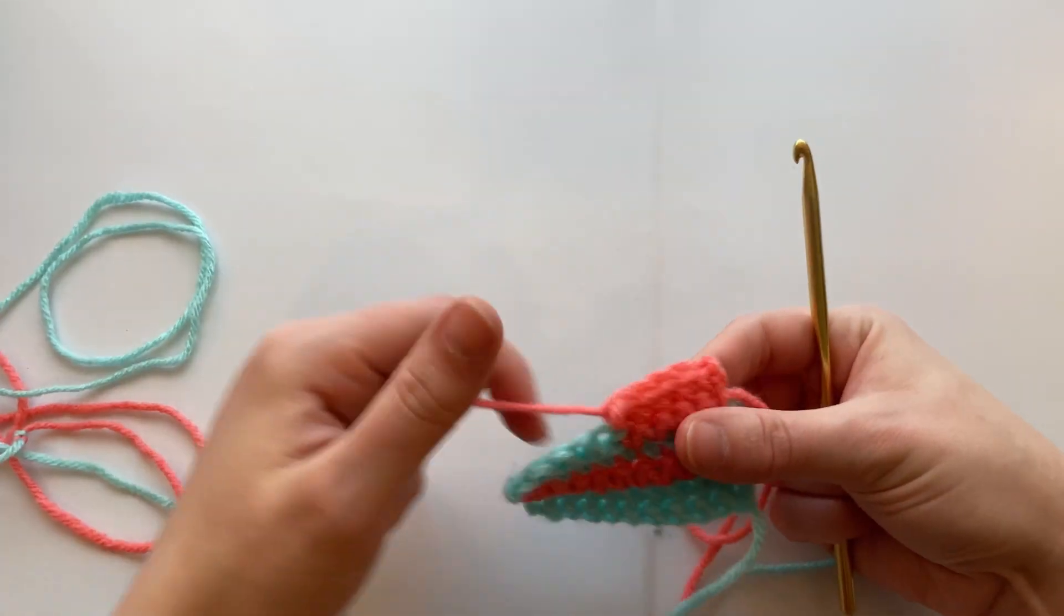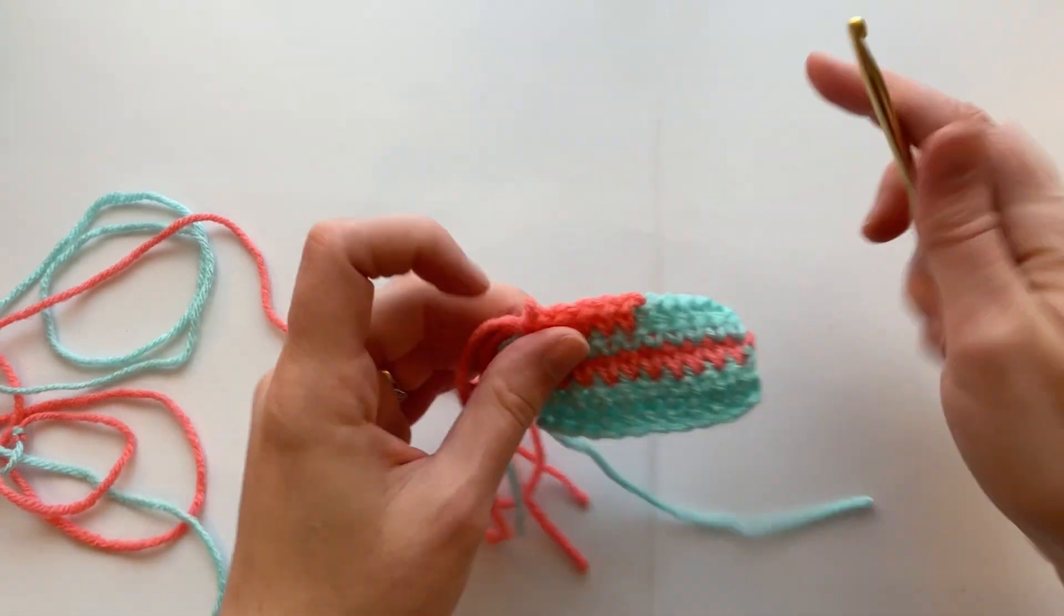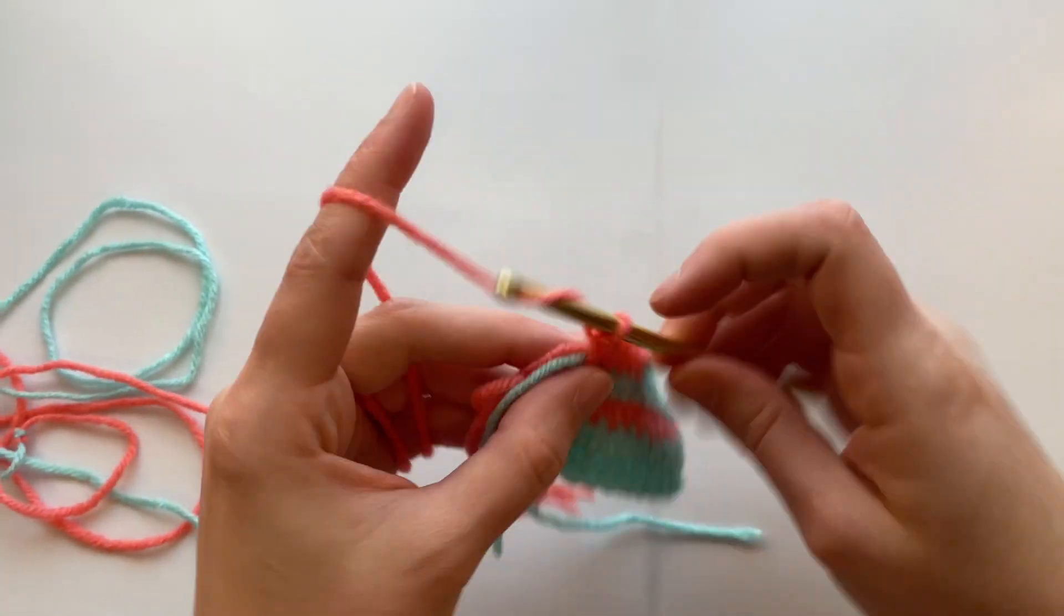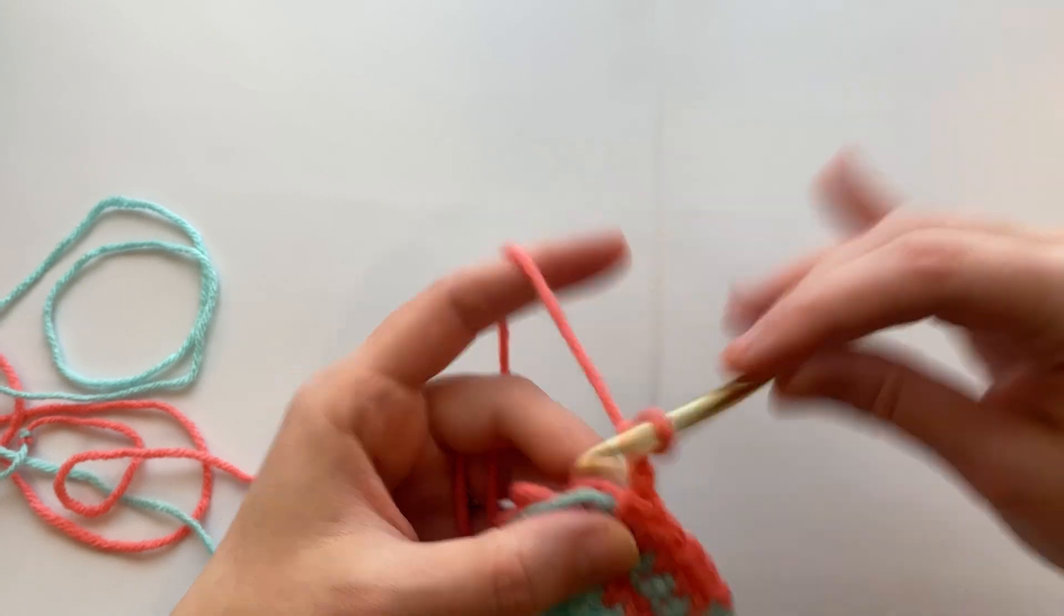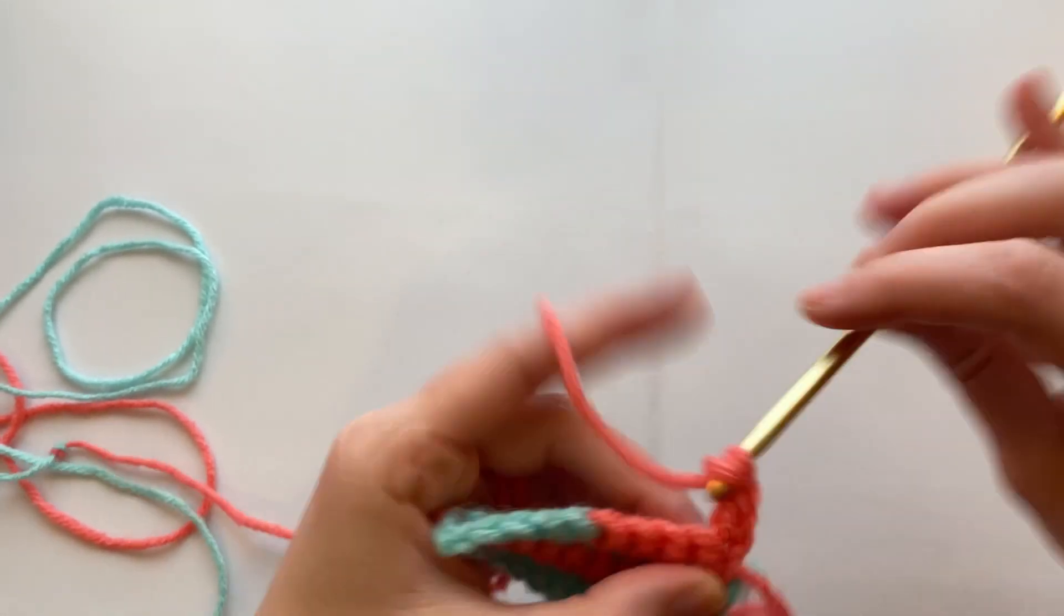So I'm gonna go ahead and do double crochet on this row to show you what I'm talking about, that way the knot ends up in the middle of the project.